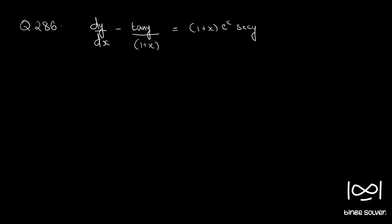Question number 286. dy/dx minus tan(y) divided by (1 + x) is equal to (1 + x) into e^x into sec(y).